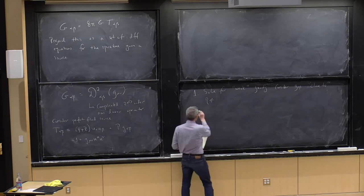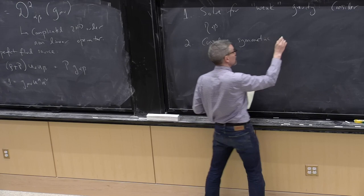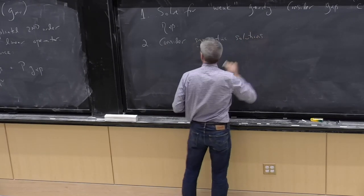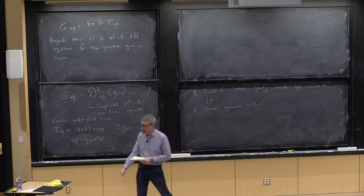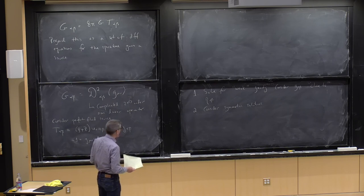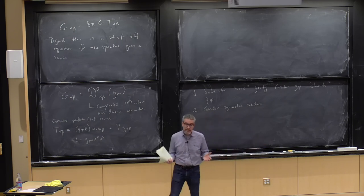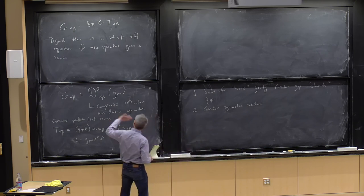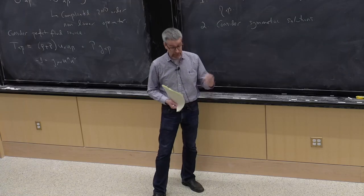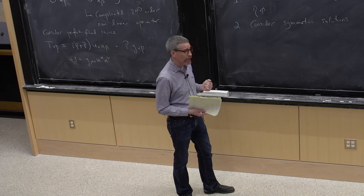Method two is to consider symmetric solutions. Part of the reason the general framework is so complicated is that there are, in general, ten of these coupled nonlinear differential equations. When we introduce symmetries or consider static or stationary solutions with no time dynamics, that reduces the number of equations you need to worry about. They may still be coupled and nonlinear, but hopefully we can reduce from ten equations to just one, two, or three.